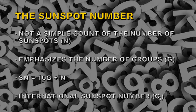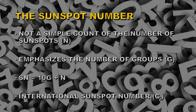So we can compare results from different observatories, each observatory is given a constant which depends on the sky conditions at the observatory and the nature of the equipment. You take your sunspot number, multiply by your personal constant, and that gives you a number that can be compared with all the other observatories around the world.